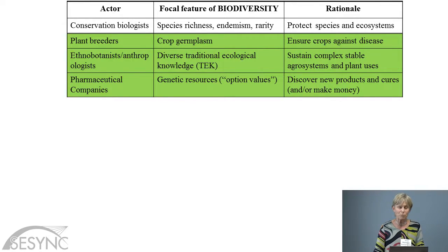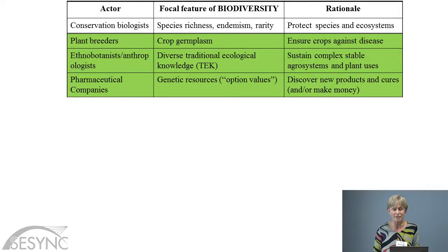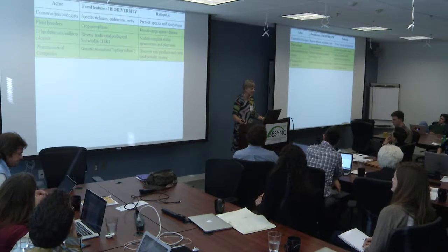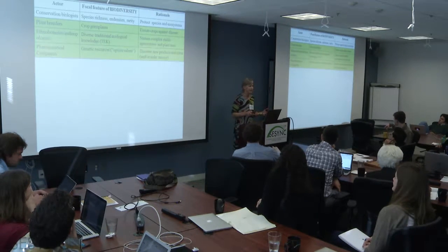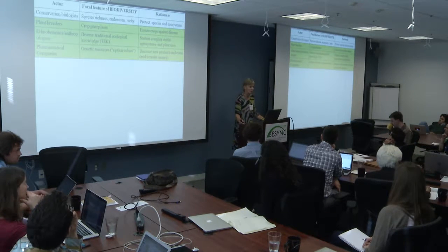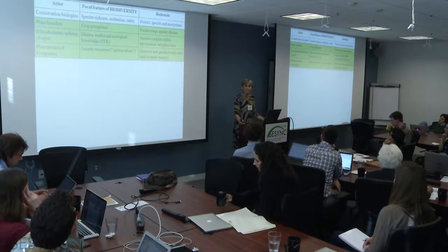Plant breeders were particularly interested in the germ plasm that exists in biodiversity, obviously with the rationale of ensuring crops against disease and drought tolerance. Ethnobotanists and anthropologists were particularly interested in the diverse traditional ecological knowledge around these diverse species and emphasized the importance of this knowledge to sustaining complex stable agro-systems and plant use. Pharmaceutical companies were interested in the genetic resource and the option values of biodiversity to make new products, cures, and make money.